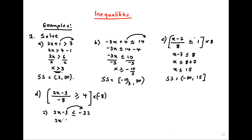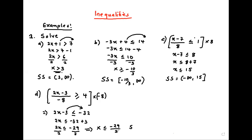So we get 2x less than or equal to negative 32 plus 3, giving us 2x less than or equal to negative 29. Divided by 2, divided by 2 — so we have x less than or equal to negative 29 over 2 as a solution. Or, as an interval solution, from negative infinity up to negative 29 over 2, included.